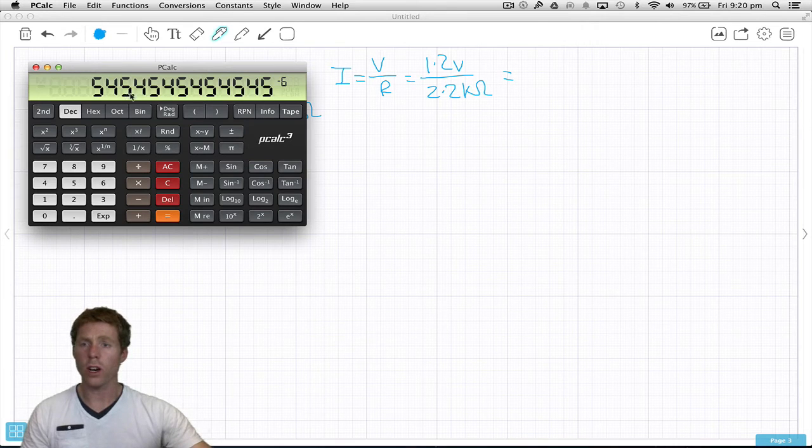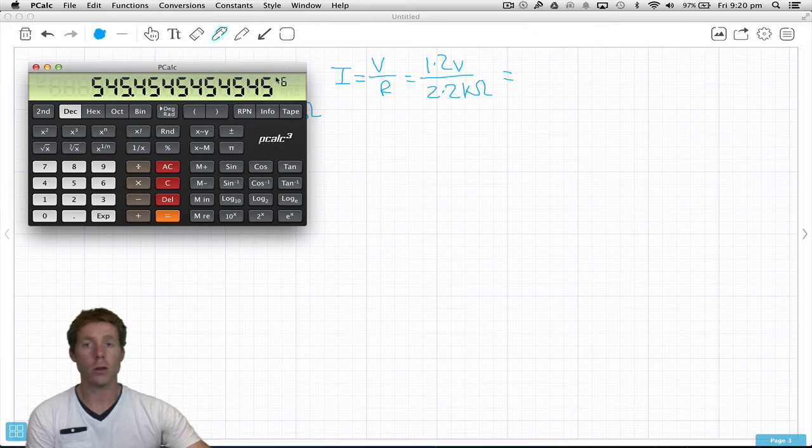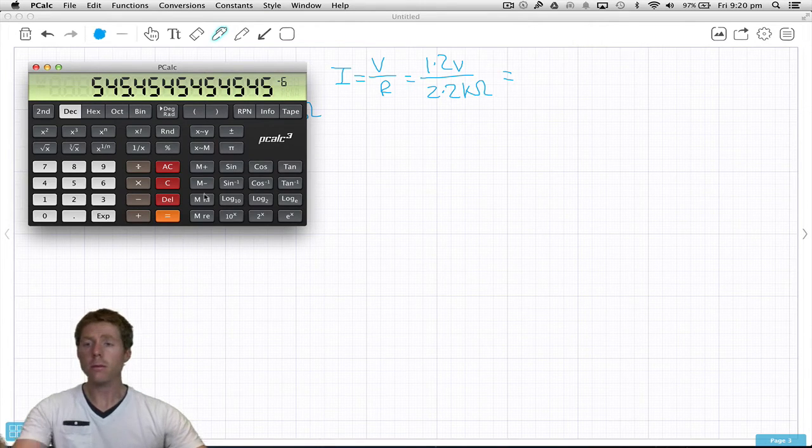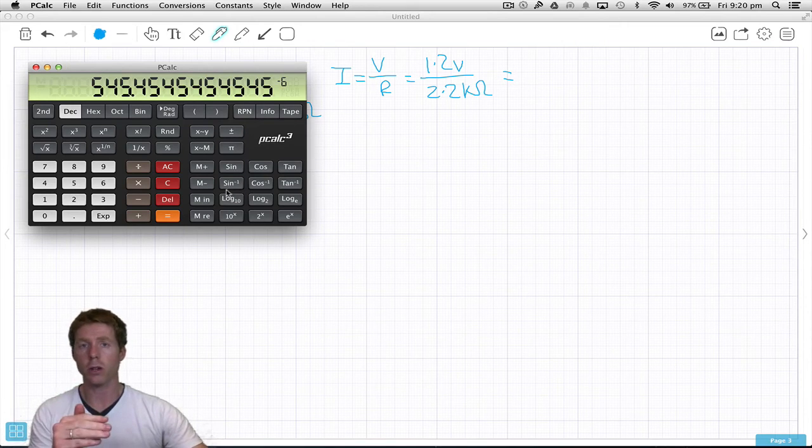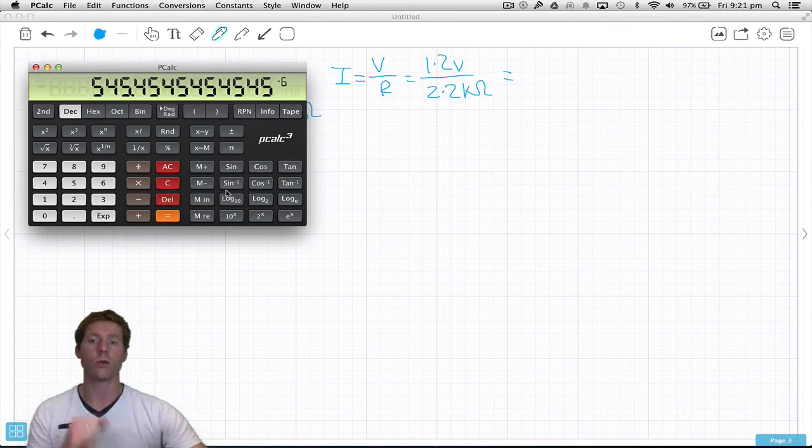Equals: 545.45 recurring, but now it's got negative 6. Hopefully you remember negative 6 is micro. Negative 3 is milli, negative 6 is micro, negative 9 is nano, negative 12 is pico.